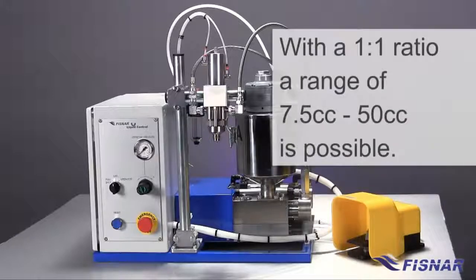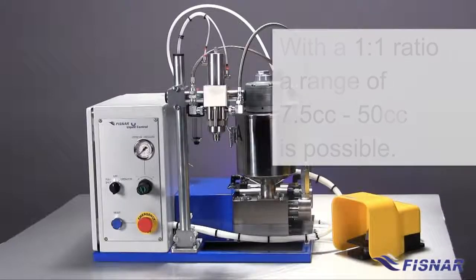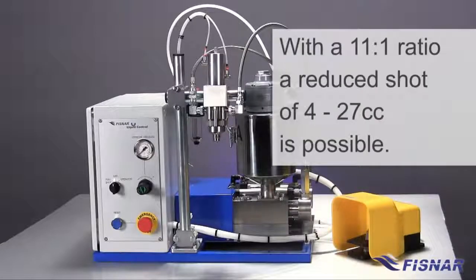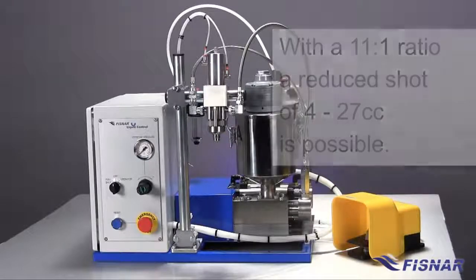Therefore, in an example of a 1 to 1 ratio, a range of 7.5 to 50 cc is possible. When selecting a ratio of 11 to 1, the maximum ratio that the machine can accommodate, a reduced shot range in the order of 4.0 to 27 cc is possible.